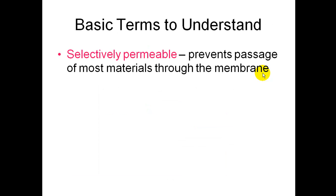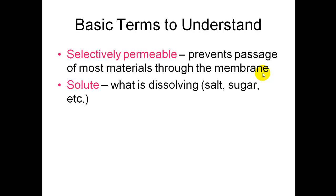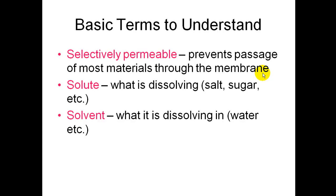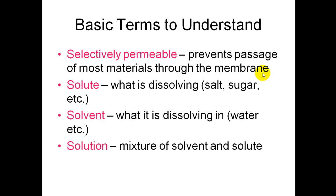Basic terms to understand: selectively permeable means the membrane prevents the passage of most materials. A solute is what is dissolving, such as salt or sugar. A solvent is what it dissolves in — in our case, most likely water. A solution is the mixture of solvent and solute.